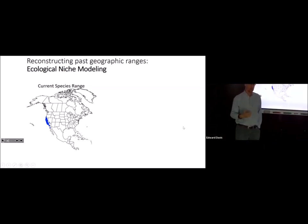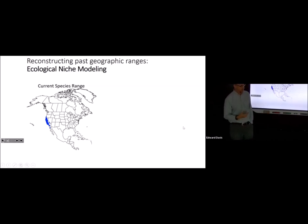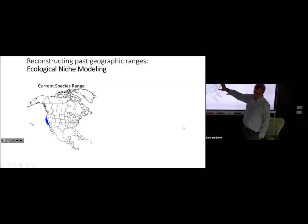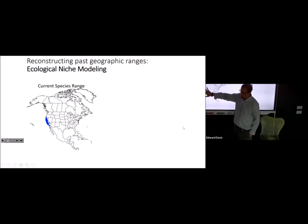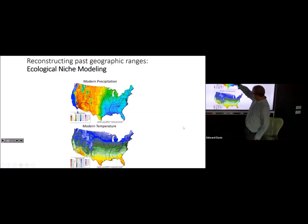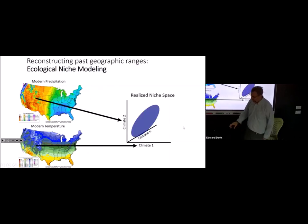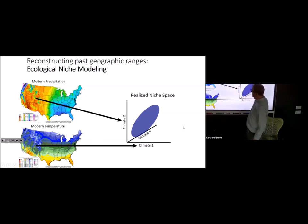I'm going to run through a series of studies that others have done and I've done that try to use fossils in a practical way to understand how we can think about species moving their geographic ranges with climate change. This is probably a review for most folks here, but I've been talking a lot about ecological niche modeling. The way it works is you take a current species range — this is a species of Microtus californicus — map that range onto climate variables like precipitation and temperature, and extract the values the organism experiences within its range to create a realized niche in climate space.